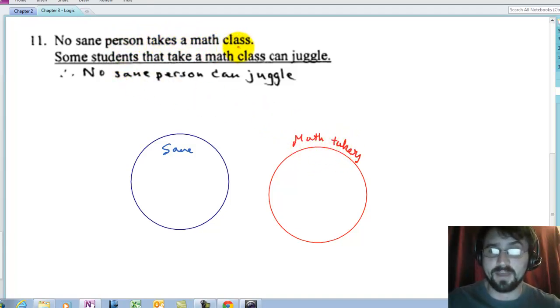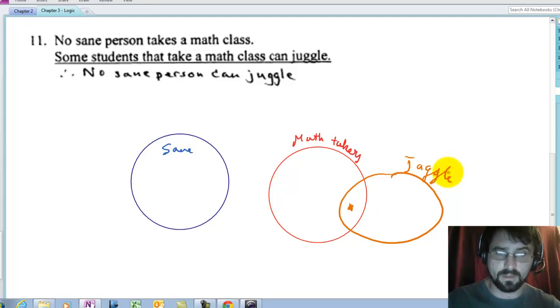No sane person takes a math class because it's none. The circles are disjoint. Some students that take a math class can juggle. I could put this circle out here somewhere. Out on the right. And then I could say that here's the person, here's at least one that can juggle. That would be one possibility. But that would seem to confirm the argument, to validate the argument.